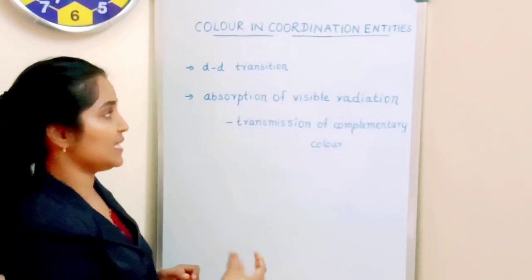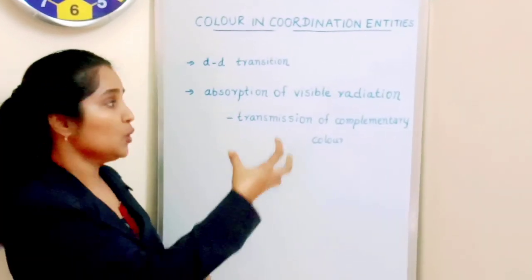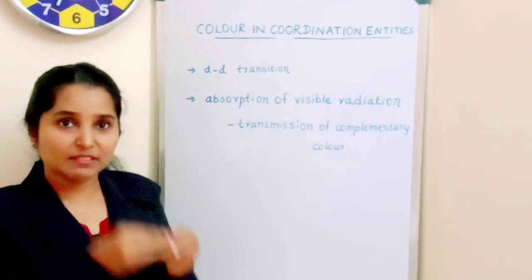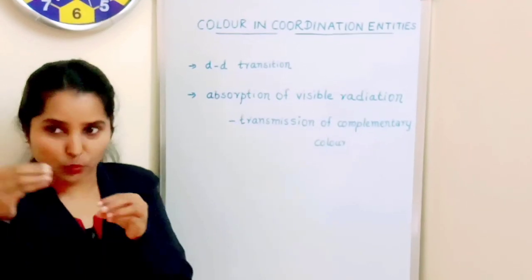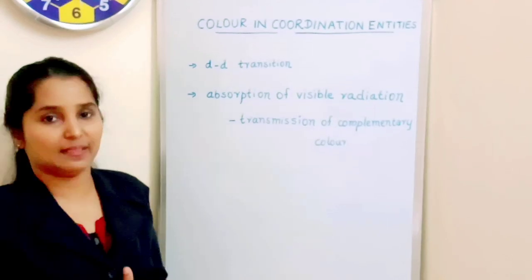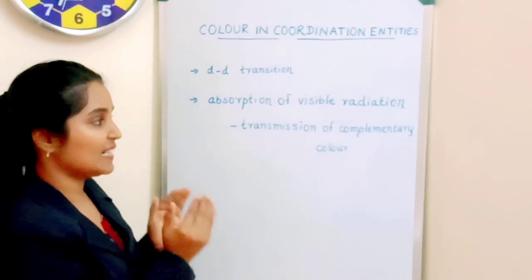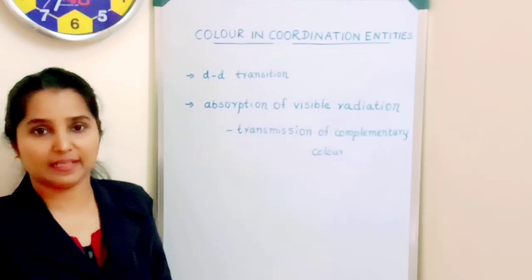The frequency of radiation absorbed will be found in the visible region and that visible radiation with a particular frequency will have a color. Just the opposite color we will be observing. It will be transmitting the complementary color.